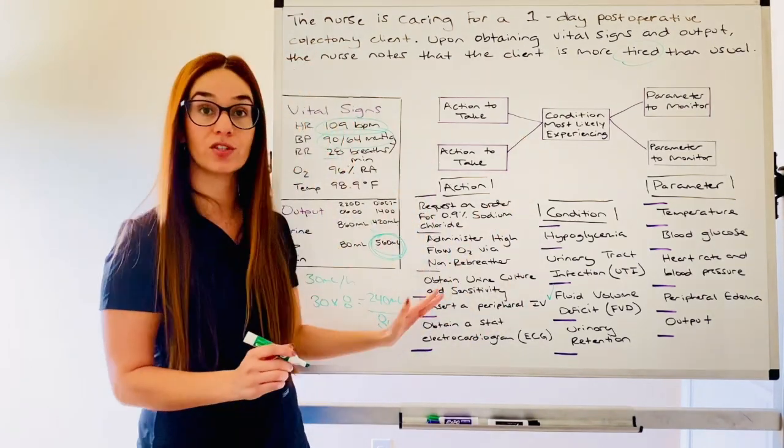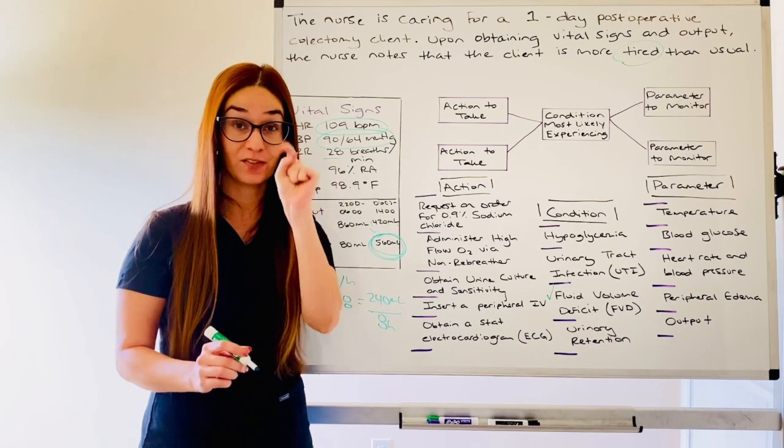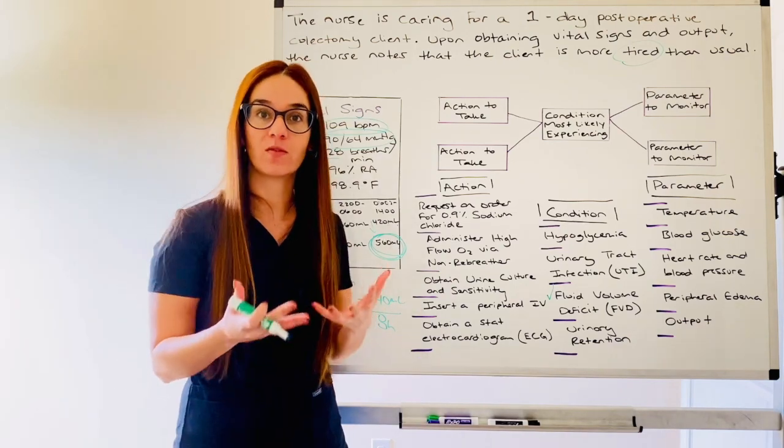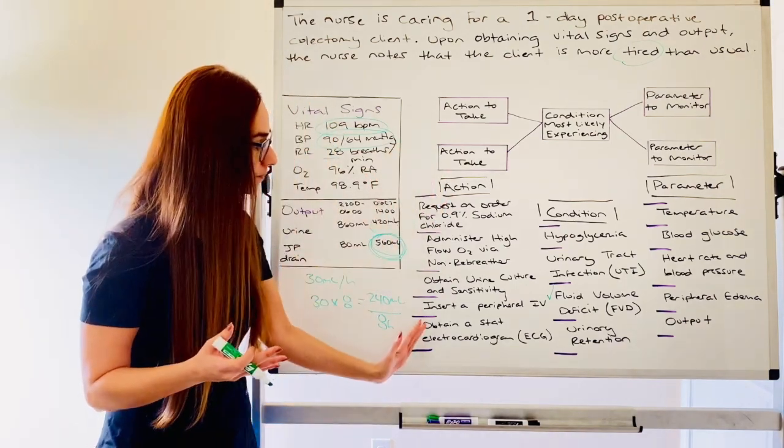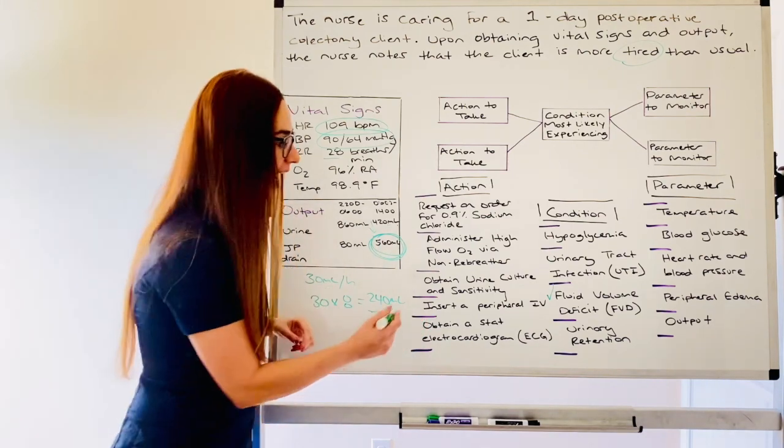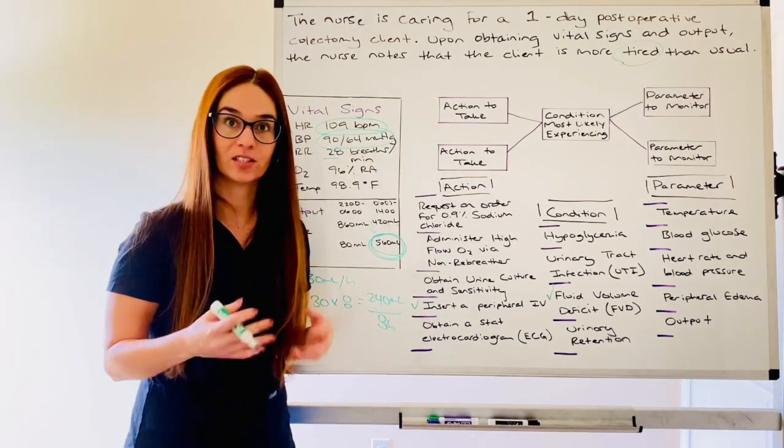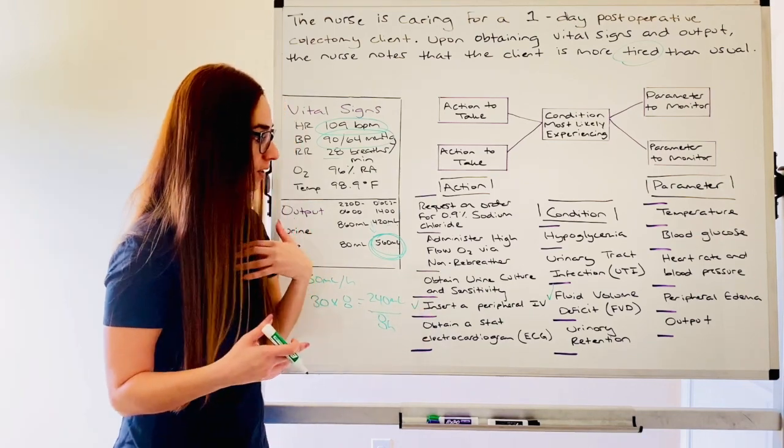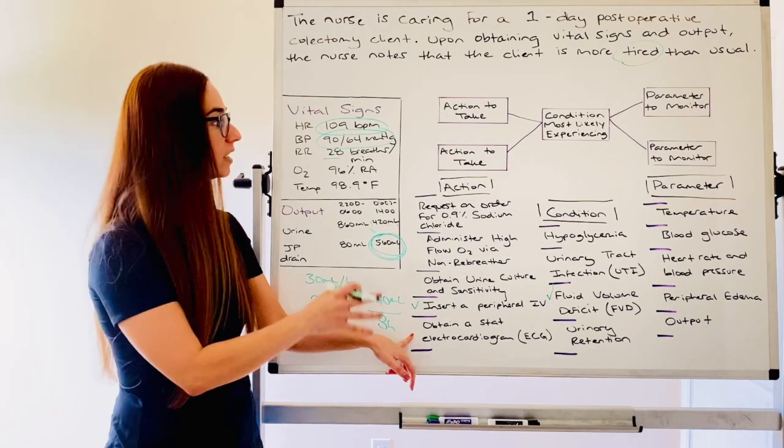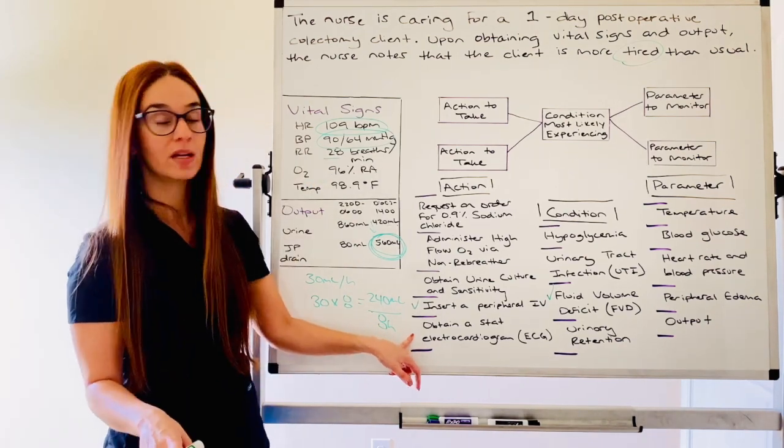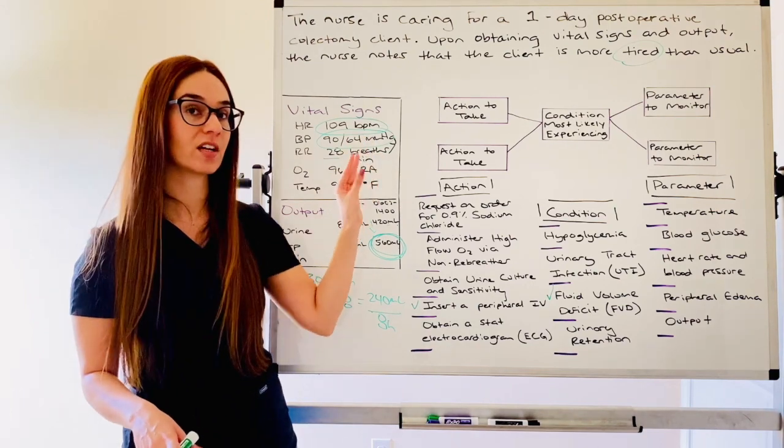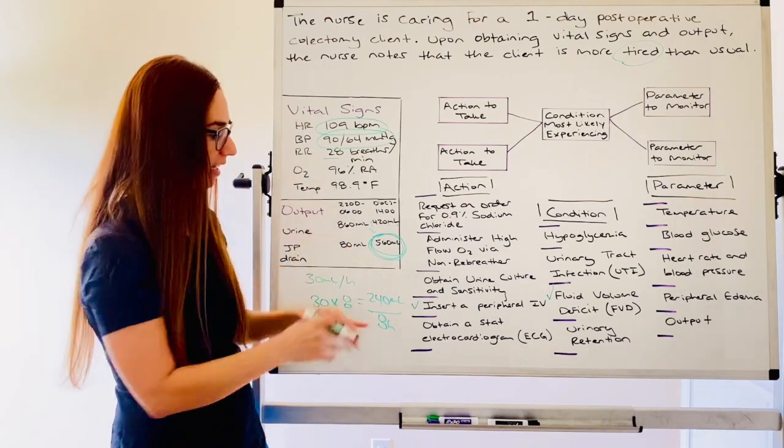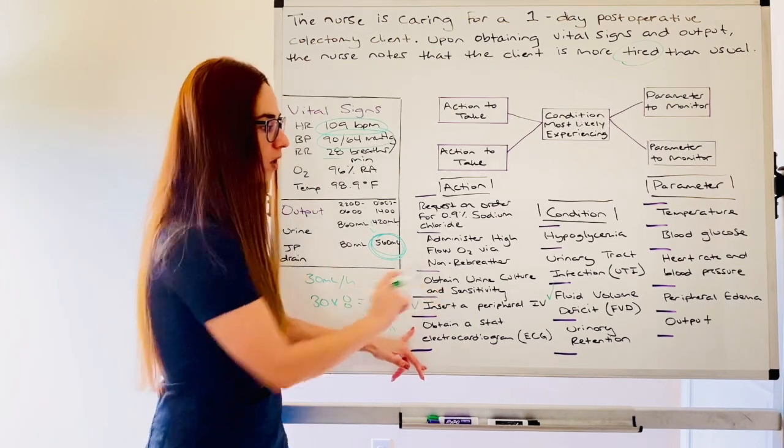So I would pick fluid volume deficit as the condition I think they're most likely experiencing. Based upon this condition, what would you do? Fluid volume deficit, the number one thing, if you can stop the trigger, stop it. But also think we need to replace volume. Let's do process of elimination. I have to have some type of access to be able to administer fluid. So I'm going to definitely insert a peripheral IV and I want to think replace volume. So obtain a stat EKG or ECG. Do you see anything related to abnormal heart rhythm? Yes, it's tachycardia, but we have no more information. We did auscultate, but there's no evidence in this data. So hold on to it, but I'm not saying that would be my priority for fluid volume deficit.